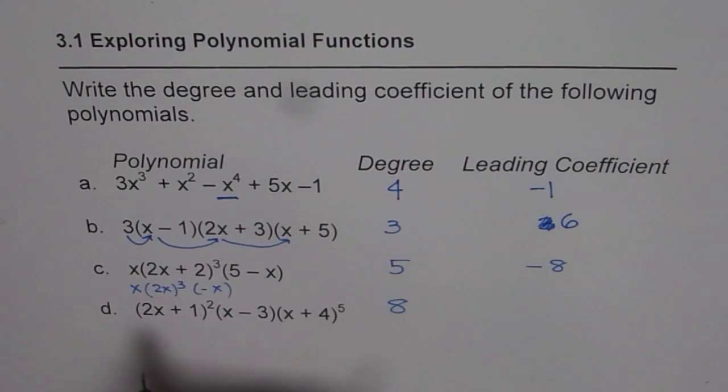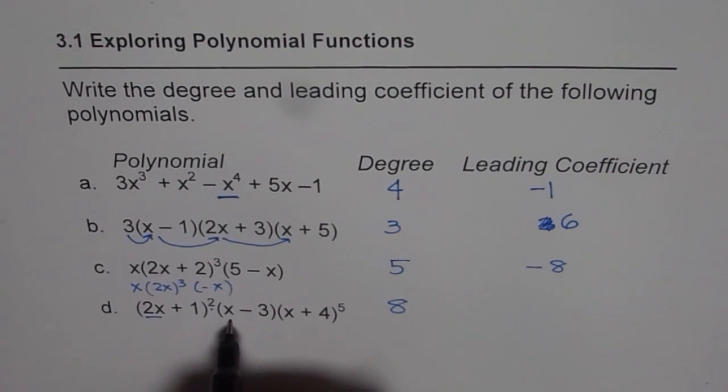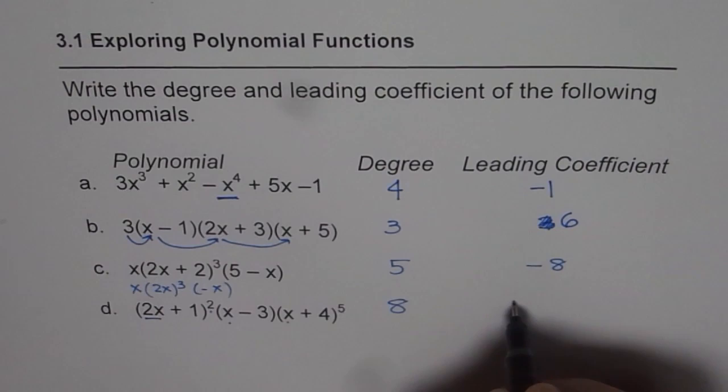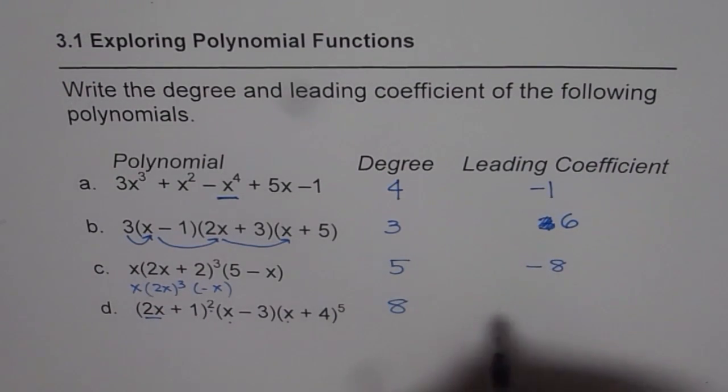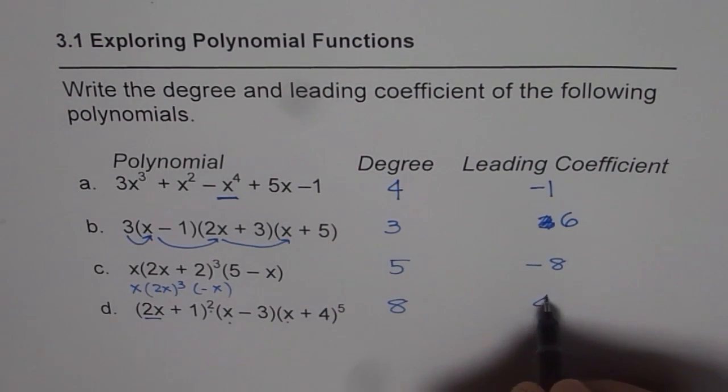And leading coefficient will be, you have to multiply 2x cube, x and x to the power of 5. So the number is 1 to the power of 5. So the leading coefficient is 2 square, let me write, 2 square is 4, times 1 times 1. So it is 4.